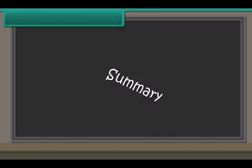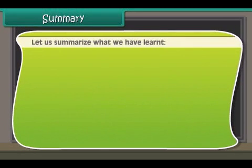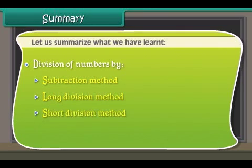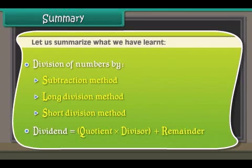Let us summarize what we have learnt: Division of numbers by subtraction method, long division method, short division method. Dividend is equal to quotient into divisor plus remainder.